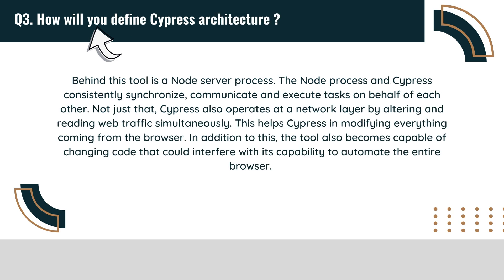How will you define Cypress architecture? Behind this tool is a Node server process. The Node process and Cypress consistently synchronize, communicate, and execute tasks on behalf of each other. Cypress also operates at a network layer by altering and reading web traffic simultaneously. This helps Cypress in modifying everything coming from the browser, and the tool also becomes capable of changing code that could interfere with its capability to automate the entire browser.